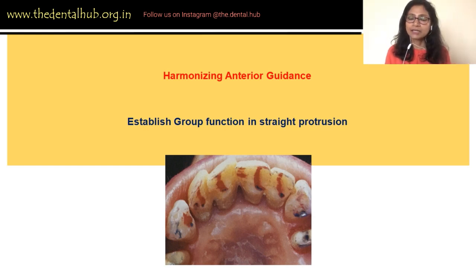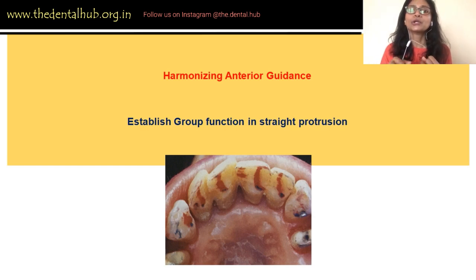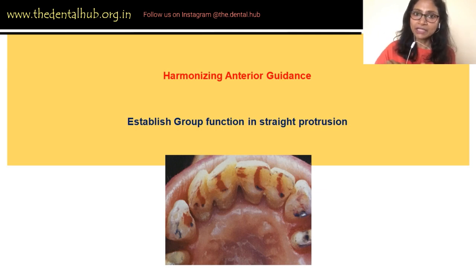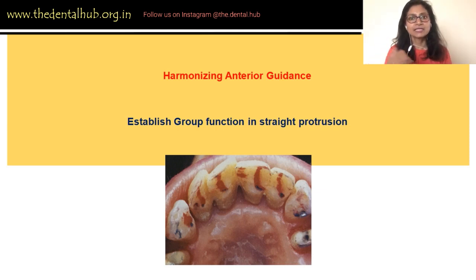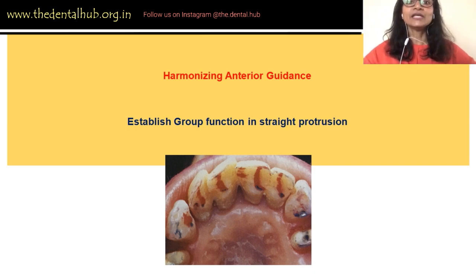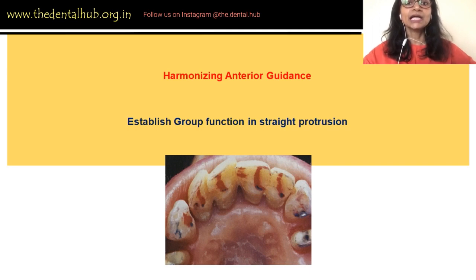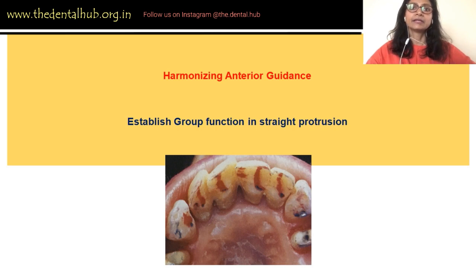To adjust the lingual surfaces, you follow the four R's: reshape if a minimal change is needed, reposition the tooth or teeth, restore a particular surface so it also comes into contact along with the other teeth, or remove. These are the steps to ensure simultaneous contact of the mandibular incisor incisal edge with the lingual surfaces of the maxillary incisors as the mandible moves from centric relation to edge-to-edge position.